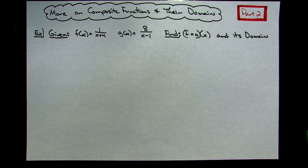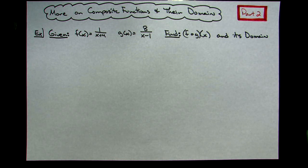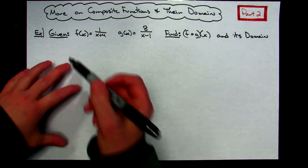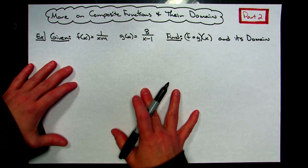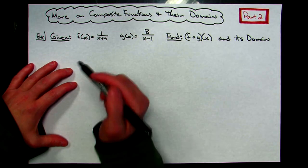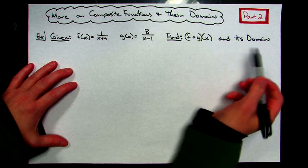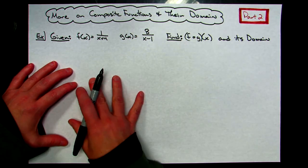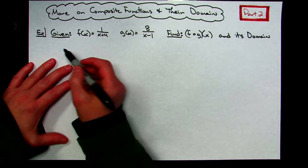This is part two in two different videos where I'm dealing with composite functions and their domain. If you didn't watch part one, it might be helpful because jumping here in the middle of this might be a little confusing. I'm just going to work out one example here. We're going to do two things: we're going to find both the composite function and we're going to find its domain.